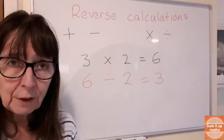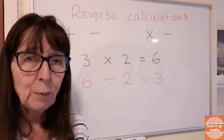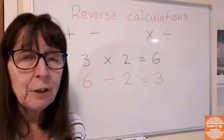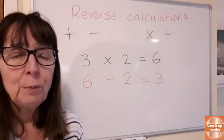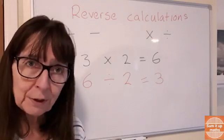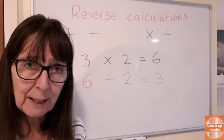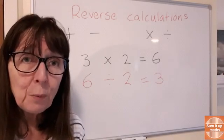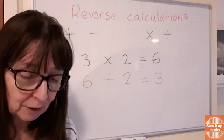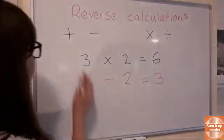That is the way that we do our reverse calculations. Whatever sum you've got, whether it's add, takeaway, times or divide, whichever of those four operations, you will be able to use the opposite one to check that you can get back to your original amount. Another way of checking your calculations is to do an estimate.